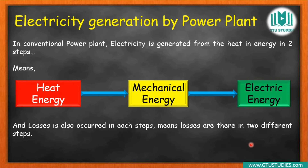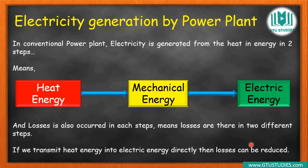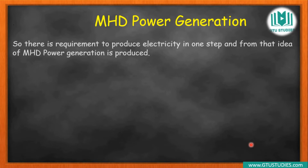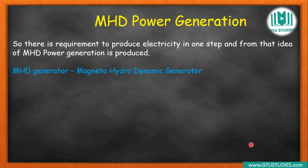If we continue using thermal power plants, the problem is that through the thermal power plant we use heat energy. Instead, if we directly convert heat energy into electrical energy in a single step, we get two main benefits from using an MHD generator. The MHD power generation concept is based on a generator that directly converts heat energy into electrical energy.